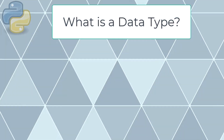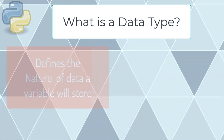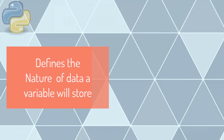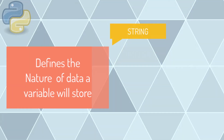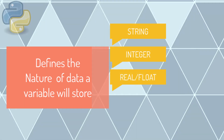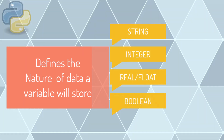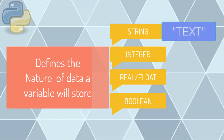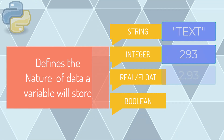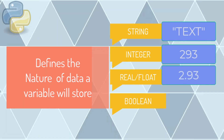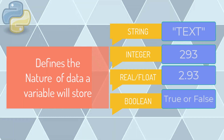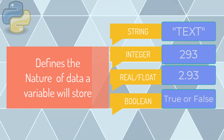What is a data type? A data type defines the nature of data a variable will store. There are several used in Python: string, integer, float (real), and boolean. A string stores text. An integer is a whole number, for example 293. A float or real is a decimal number, for example 2.93. A boolean has two states, for example true or false, or one or zero.